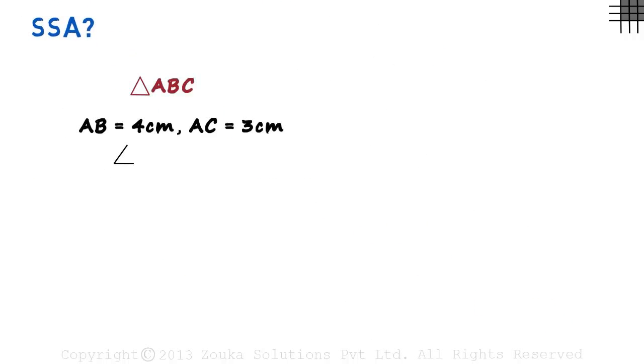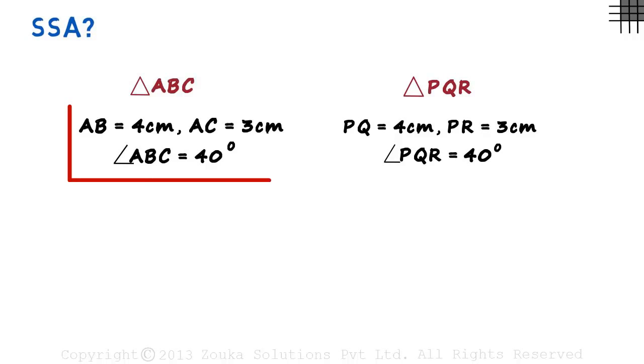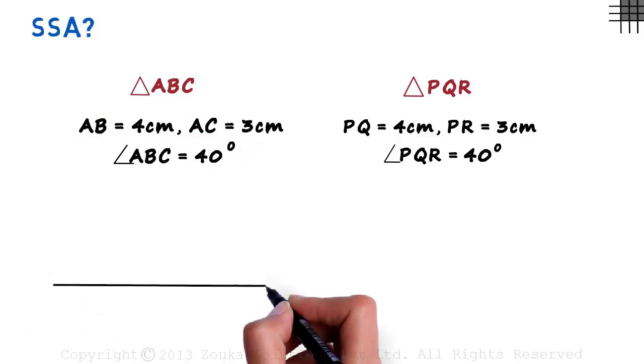We have been given the following data about these two triangles. Look at the data of the first triangle. We have been given AB and AC. The included angle should have been angle A, not B. This is not an included angle and the figure would look like this.